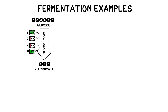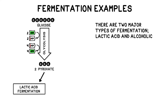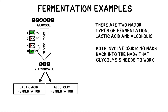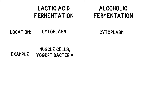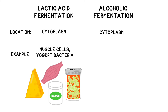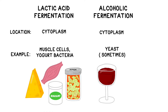Fermentation allows glycolysis to keep repeating and producing two ATP each time. There are two common fermentation pathways: lactic acid fermentation and alcoholic fermentation. Both of them involve oxidizing NADH back into the NAD+ that glycolysis needs, and both take place in the cytoplasm. Lactic acid fermentation occurs in the bacteria used to make yogurt and also in our own muscle cells. Alcoholic fermentation occurs in yeast cells, and this process is harnessed to make bread, beer, wine, and other alcohol products.